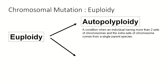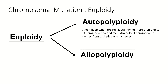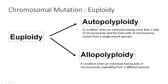The second type of euploidy or polyploidy is known as allopolyploidy. As you might have guessed, if autopolyploidy only involves a single species, allopolyploidy involves two usually closely related species. The definition of allopolyploidy is a condition when an individual has sets of chromosomes originating from two different species.